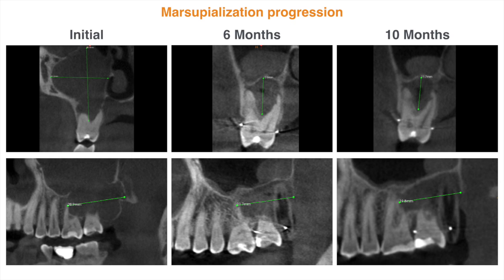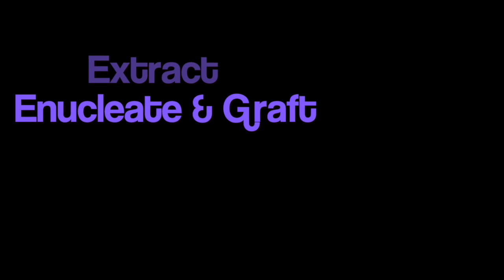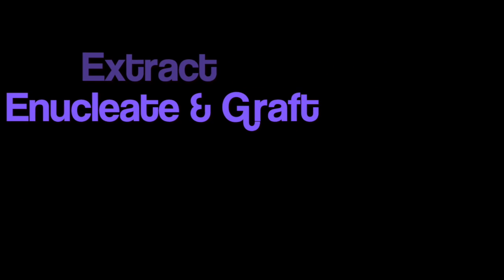With a significant decrease in the size of the cyst and an improved bone barrier superiorly between the cyst and the maxillary sinus, we can now plan the definitive treatment consisting of extractions and enucleation of the cyst. Having a smaller defect and a more defined surrounding bone, the enucleation can be done much easier and more predictably, as the improved superior wall of the cyst makes it easier to enucleate and graft. So at this time, we can proceed with the extractions of the teeth and the enucleation.